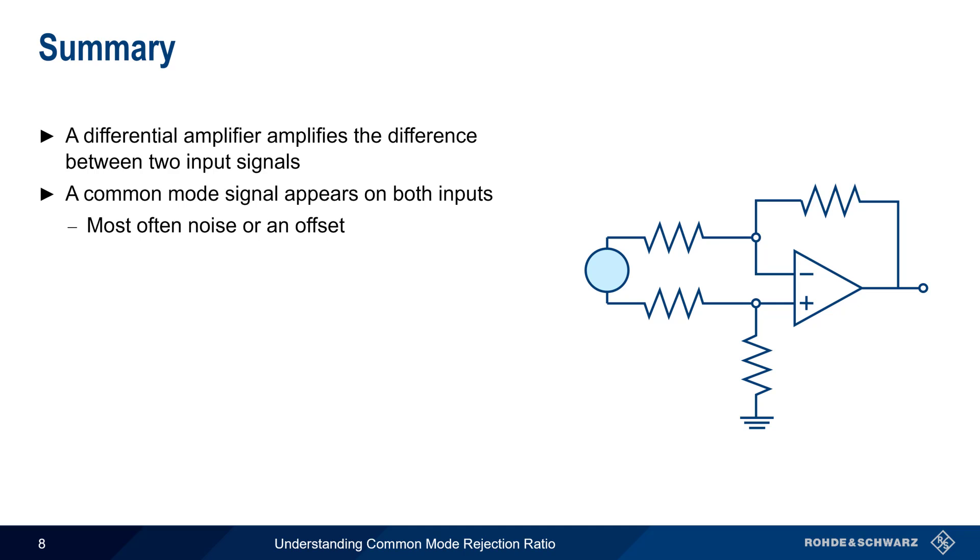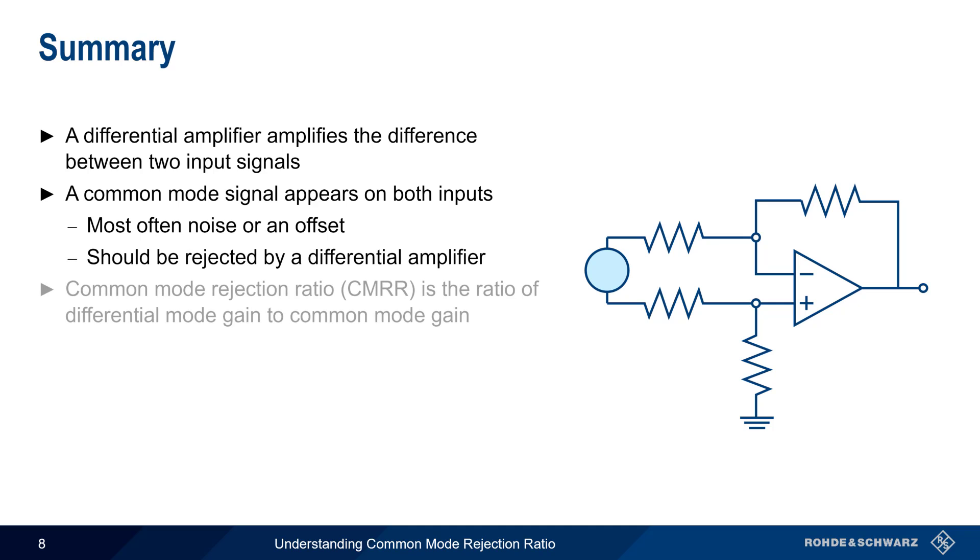These common mode signals should be rejected by a differential amplifier. As the name implies, common mode rejection ratio is the ratio of the differential mode gain to the common mode gain, and thus is an important metric for a differential amplifier.